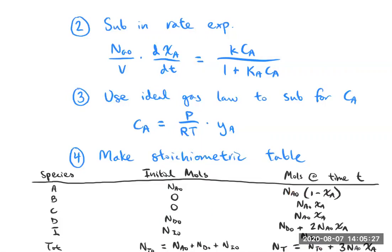Just this: yA is equal to nA over nT, and nA is this and nT is this expression. So now I'm going to change the page.